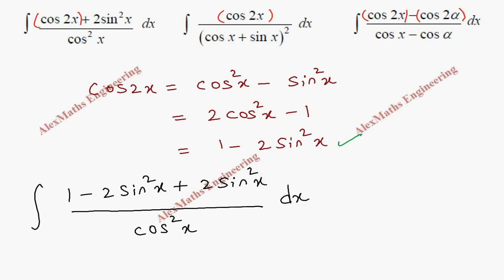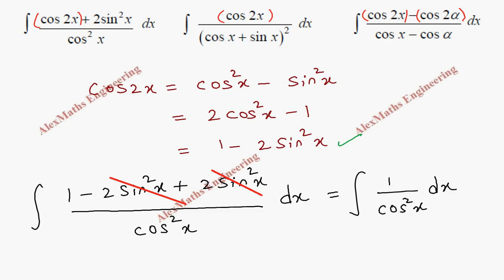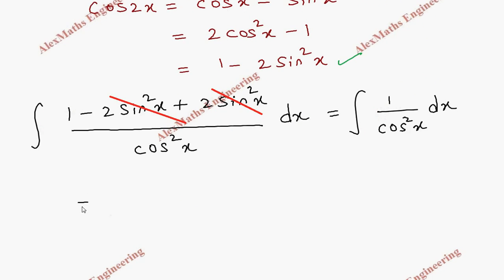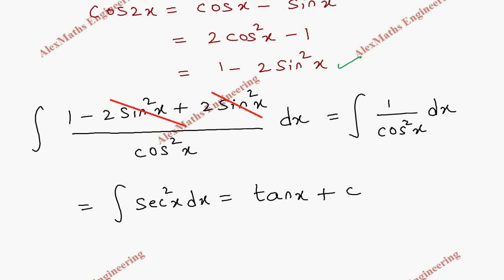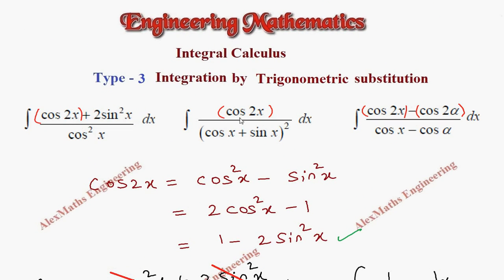After the substitution we can cancel −2sin²x and +2sin²x in the numerator, leaving us with the integral of 1/cos²x dx, which is secant²x dx. The integration of sec²x has a direct formula, which gives tan x + c.